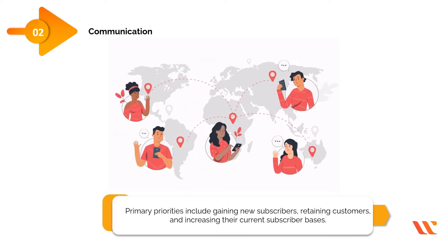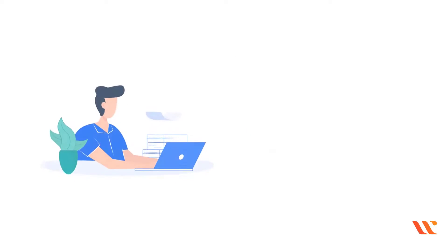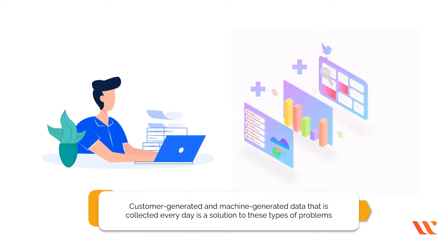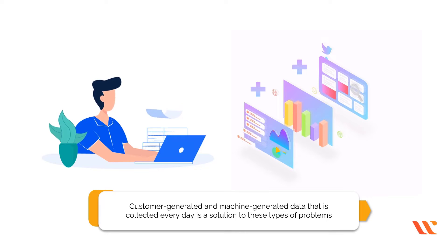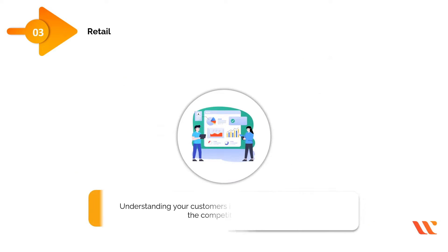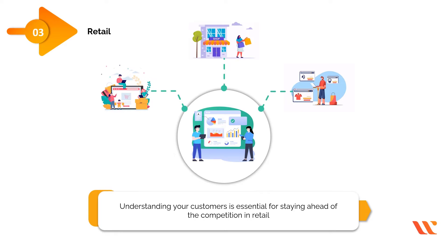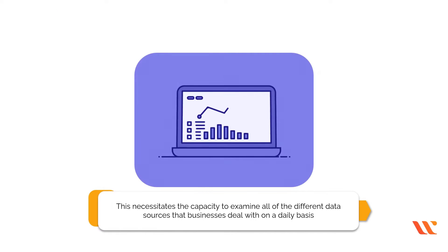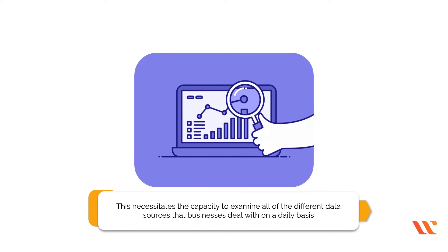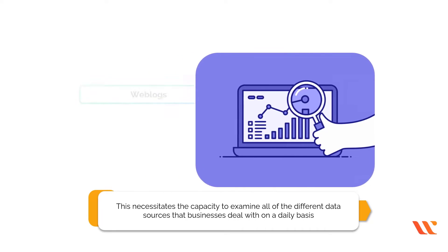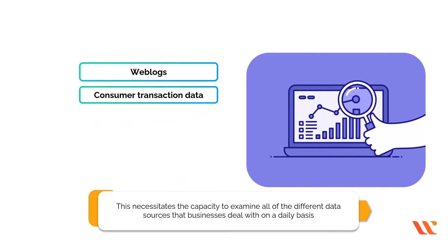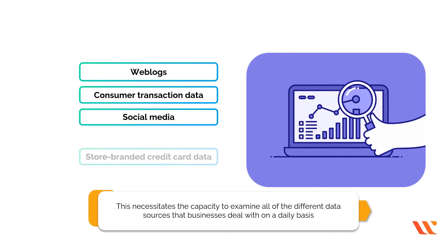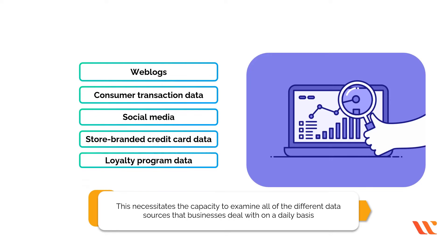In communications, telecommunication service companies' primary priorities include gaining new subscribers, retaining customers, and increasing their current subscriber base. Combining and analyzing customer-generated and machine-generated data collected every day is a solution to these problems. For retail, understanding your customers is essential for staying ahead of the competition. This requires the capacity to examine all different data sources that businesses deal with daily, such as weblogs, consumer transaction data, social media, store-branded credit card data, and loyalty program data.